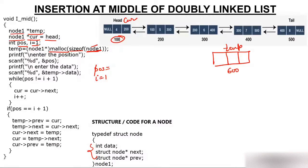Now we ask the user to enter the position. Suppose the user enters 4, so position holds 4. Then we ask the user to enter the data for this node. Suppose the data is 15, so temp->data will have 15.